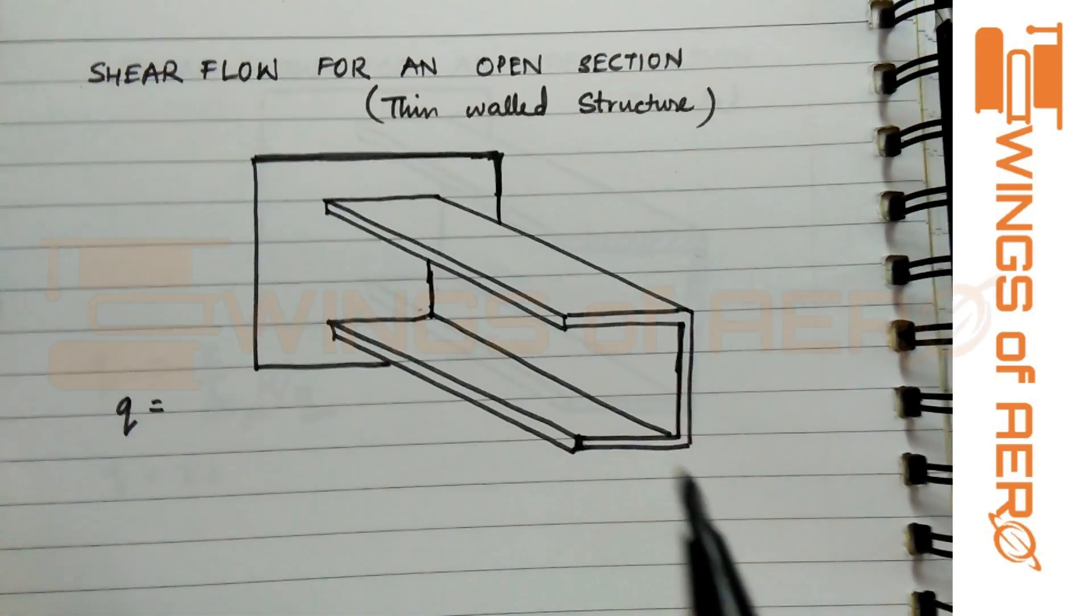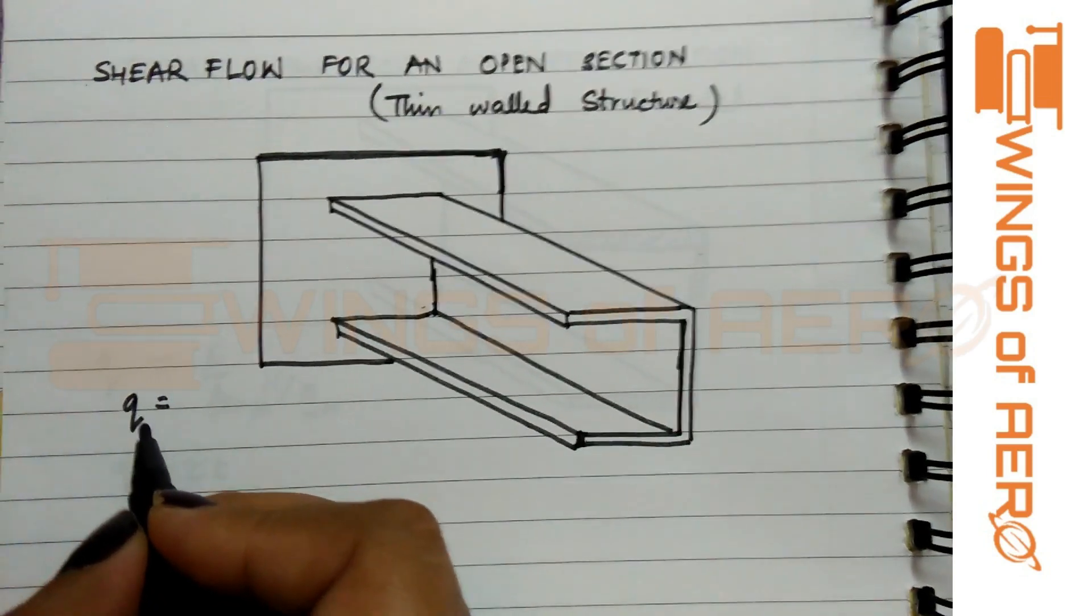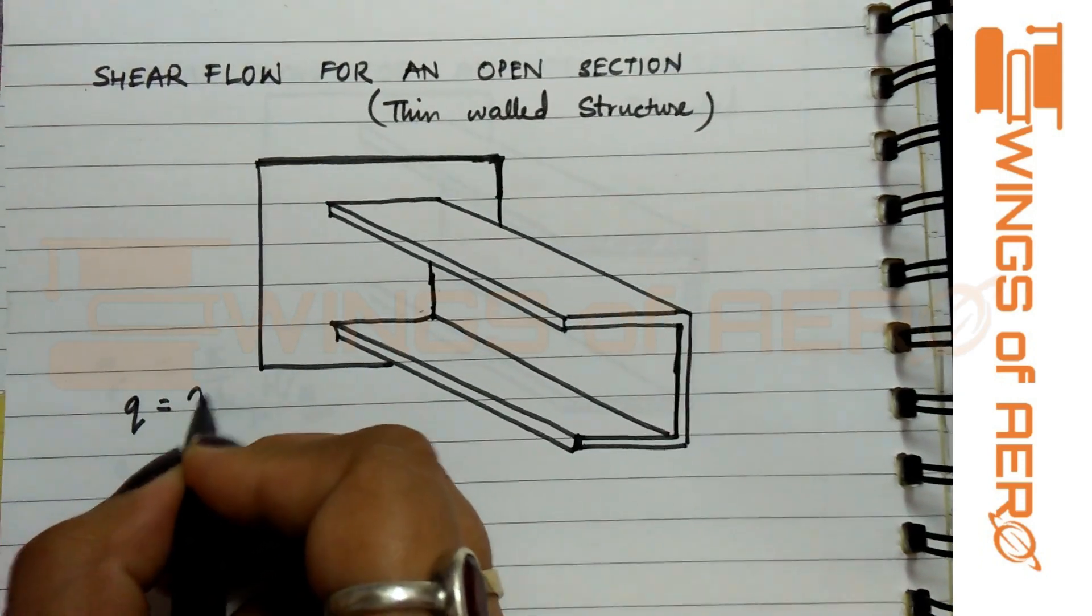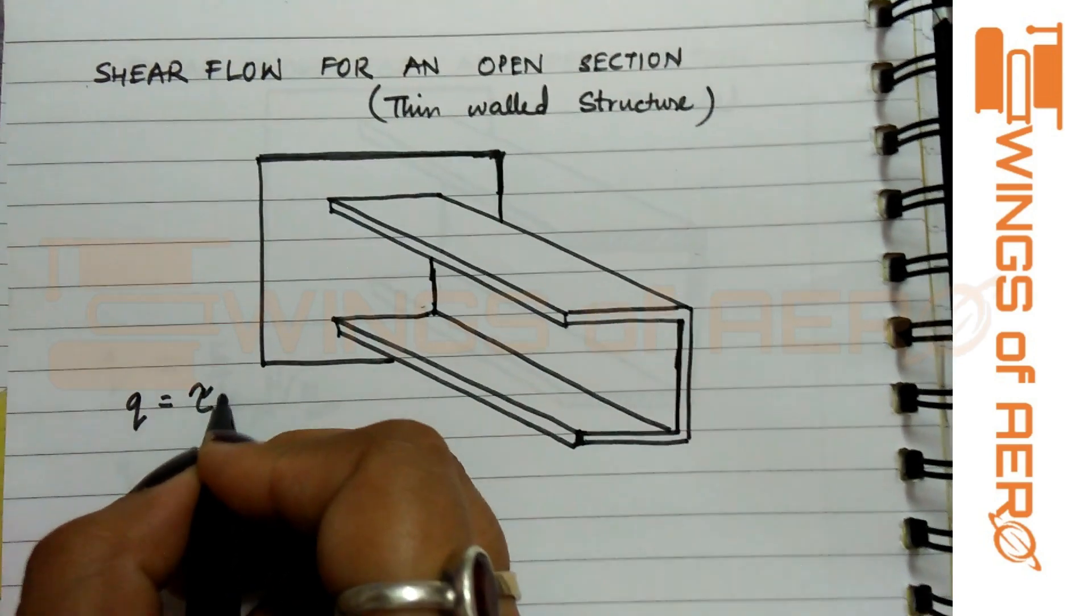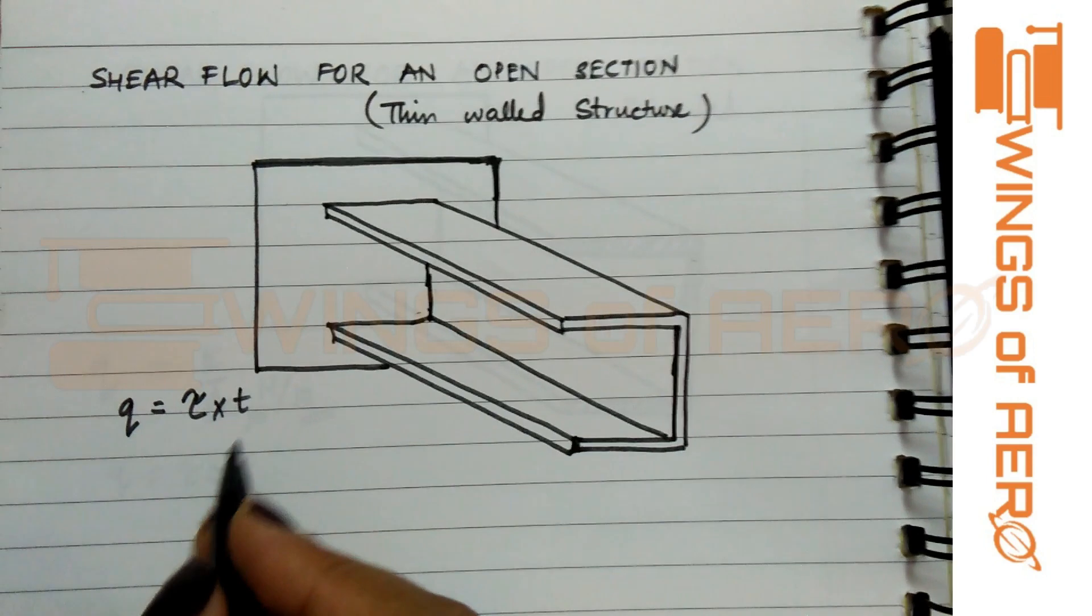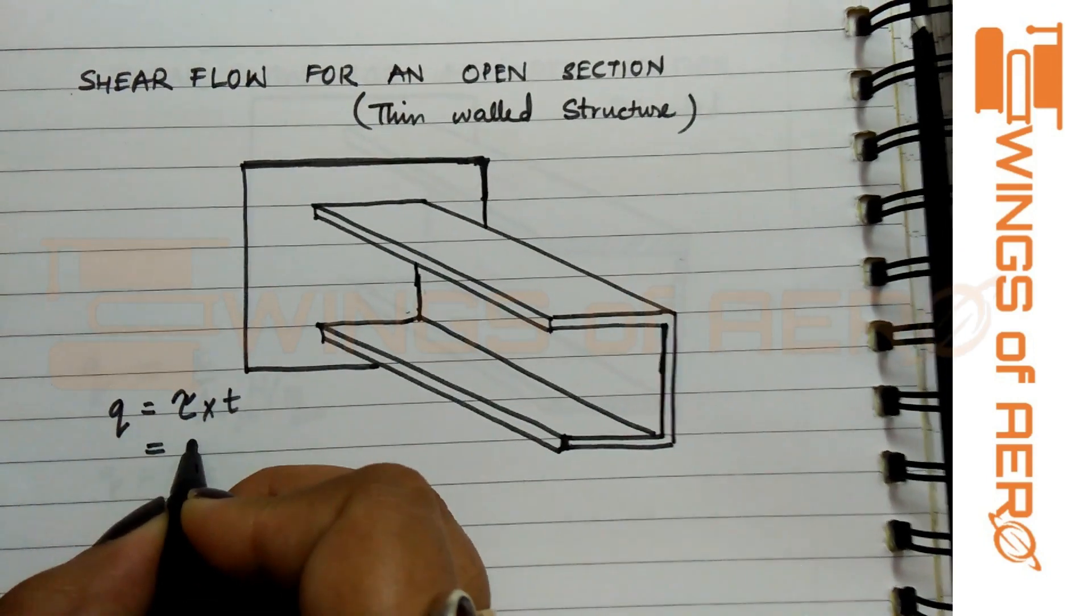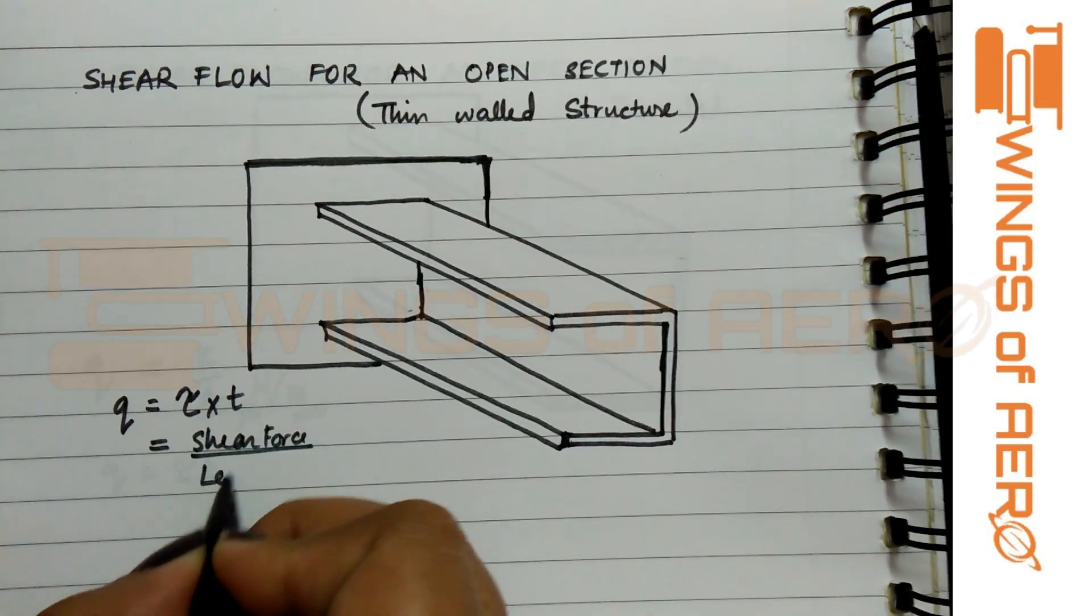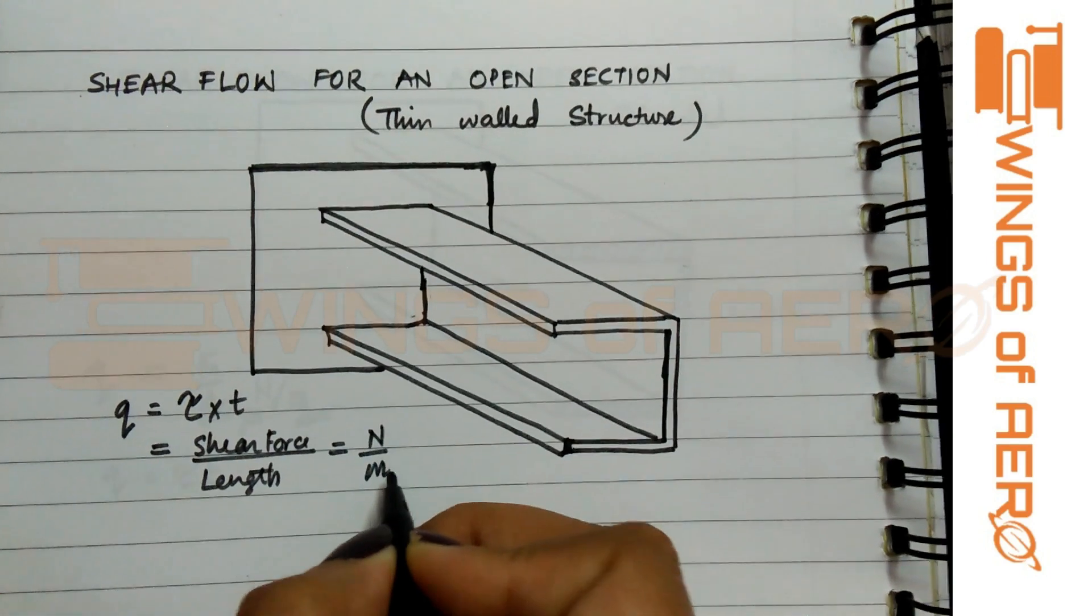Here, mostly we will deal with cross-sectional areas. The fundamental formula of finding the shear flow is denoted by Q and can be described by the product of tau into t. Tau is the shear stress and t is the thickness. It is also defined or measured by shear force per unit length, which is Newton per meter.